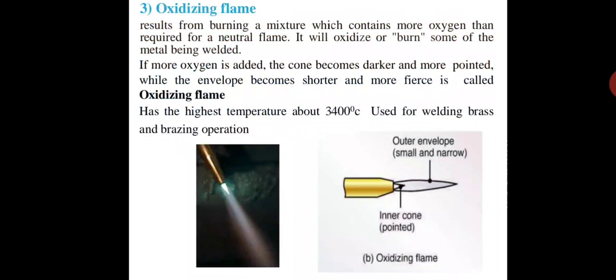The third is the oxidizing flame, which also has two cones. It results from burning a mixture which contains more oxygen than required for neutral flame. It will oxidize or burn some of the metal being welded. If more oxygen is added, the cone becomes darker and more pointed, while the envelope becomes shorter — this is called the oxidizing flame. The temperature is around 3400°C and it is used for welding of brass, zinc, copper, magnesium steel, cast iron, and brazing operations.